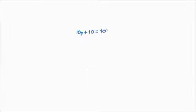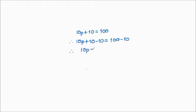Let's solve these equations using the cancellation method. First: 10p + 10 = 100. We want to cancel +10, so subtract 10 from both sides: 10p = 90. Now divide both sides by 10: p = 9.